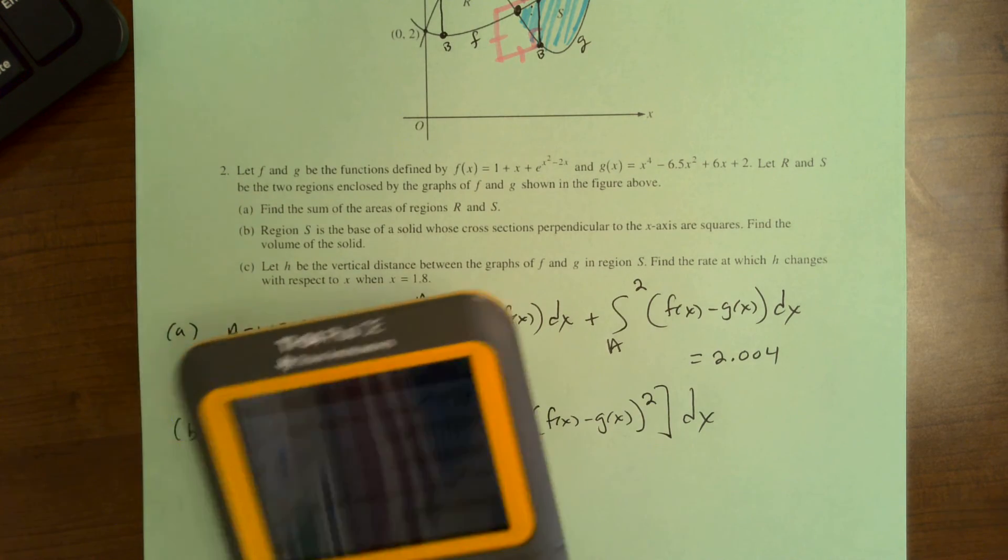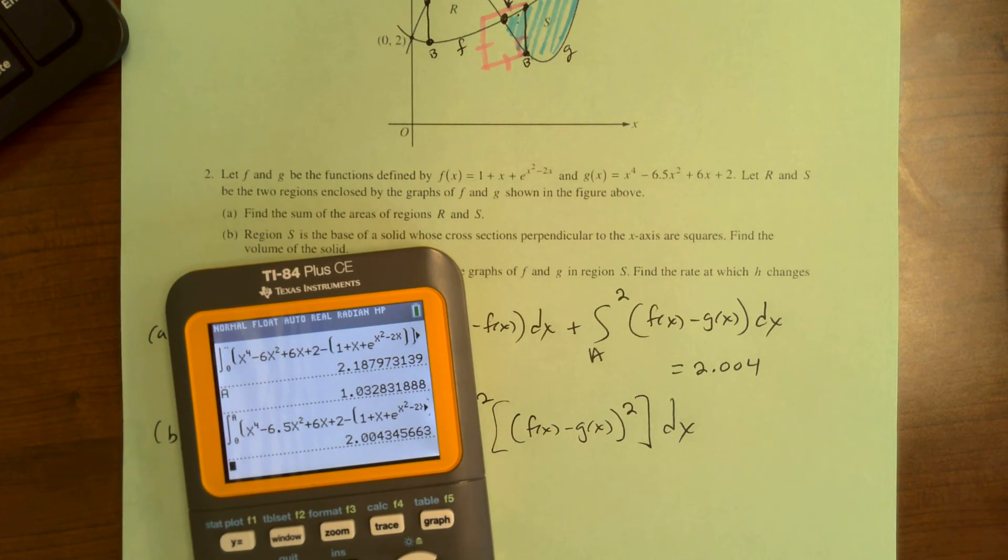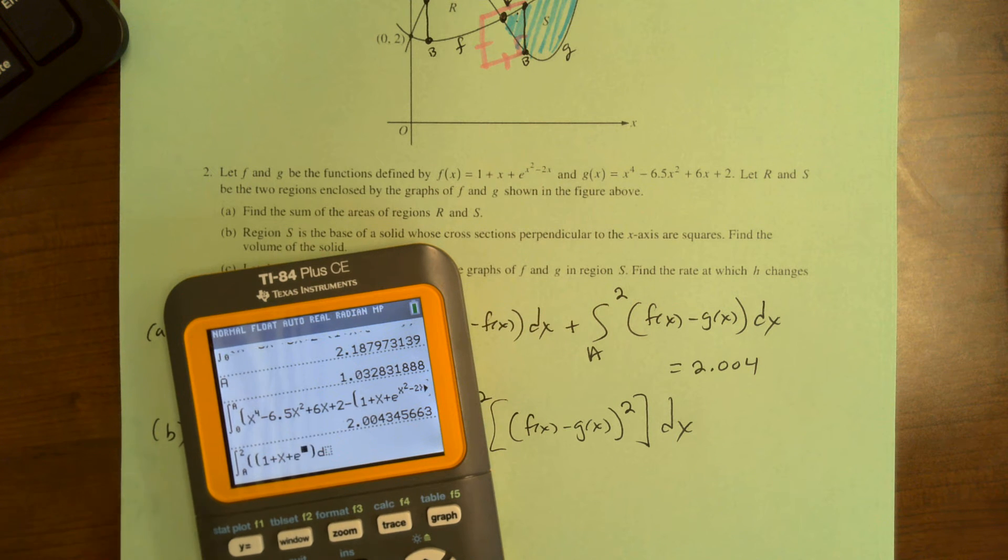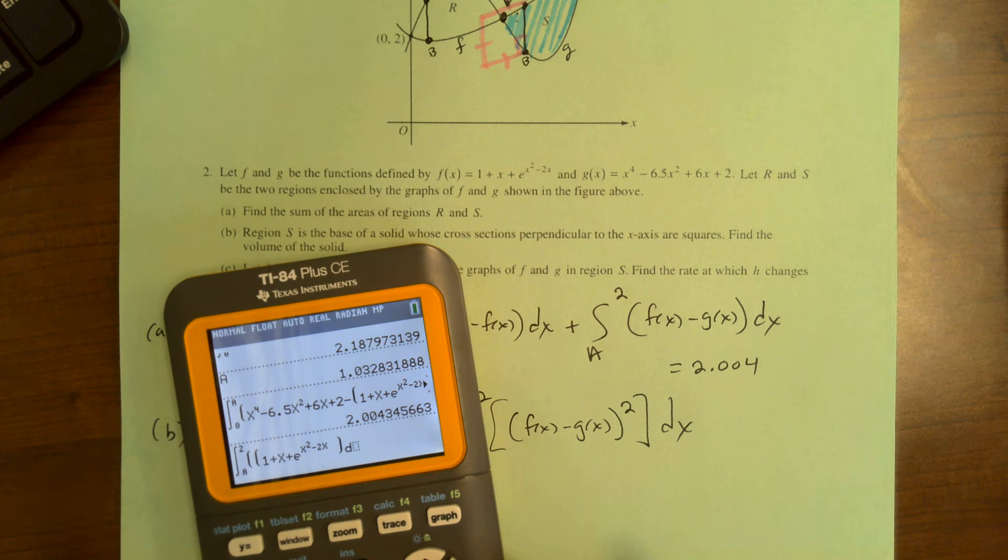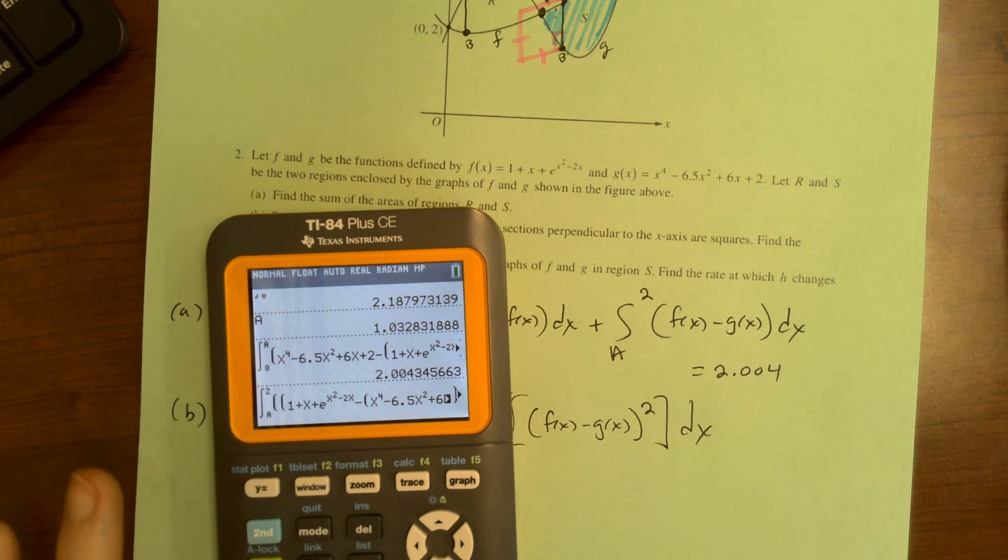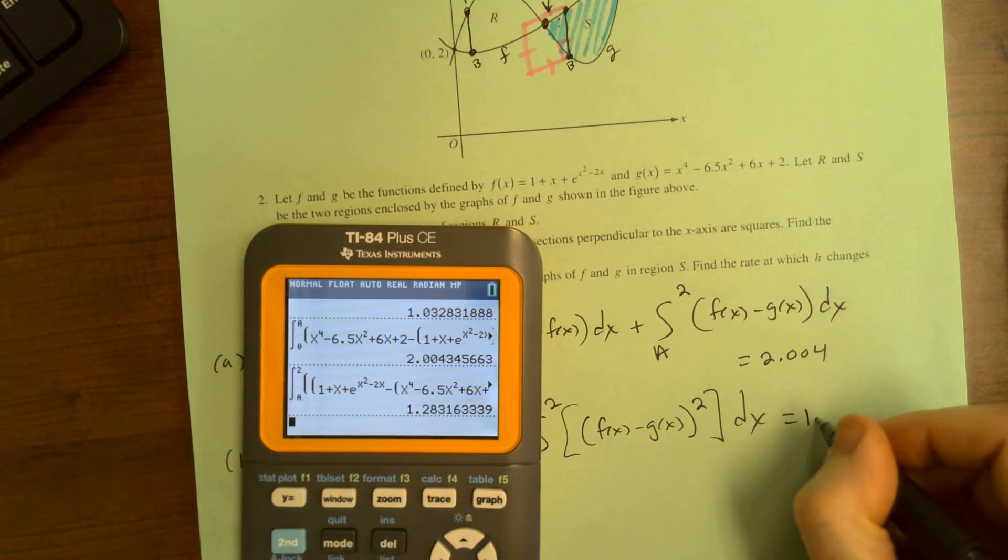Okay, that's a lot of typing. So I'll just start from scratch. So I'm going to go math, math 9 from A to 2. And then parentheses. I've got to square this whole thing. So F is first. 1 plus X plus E to the X squared minus 2X minus parentheses X to the 4th minus 6.5X squared plus 6X plus 2. Close those parentheses. Double parentheses. Square it. DX. 1.283. Yep, that's what I should have gotten.